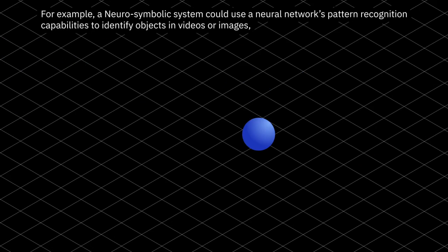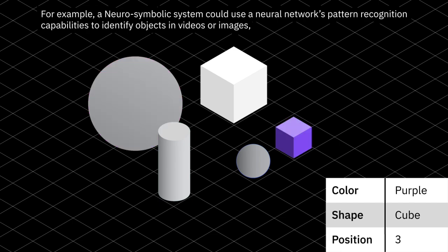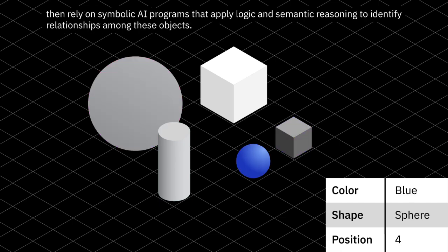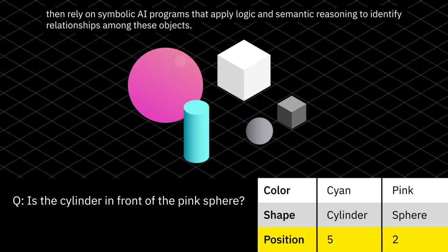For example, a neurosymbolic system could use a neural network's pattern recognition capabilities to identify objects in videos or images, then rely on symbolic AI programs that apply logic and semantic reasoning to identify relationships among these objects.